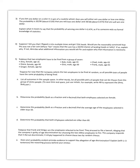Suppose I tell you that I flipped a coin multiple times and get 75% heads. Would you be reasonably convinced that this was not a fair coin — where fair means that the coin has a 50-50 chance of landing heads or tails? If so, explain why. If not, describe what additional information you would ask for and explain why that information is necessary. All it tells me is that I flipped it multiple times — it doesn't tell me how many times I flipped this coin.